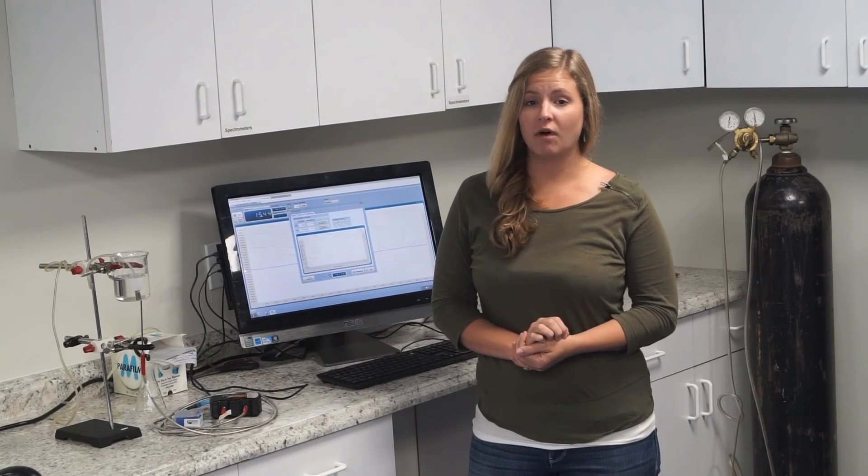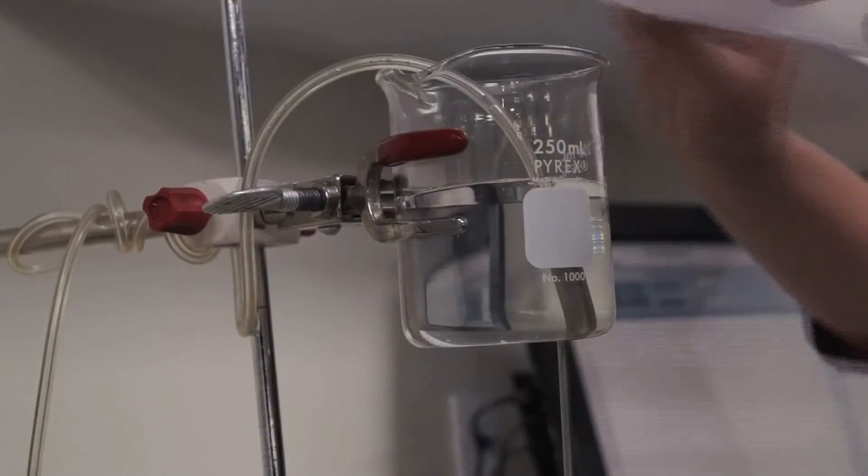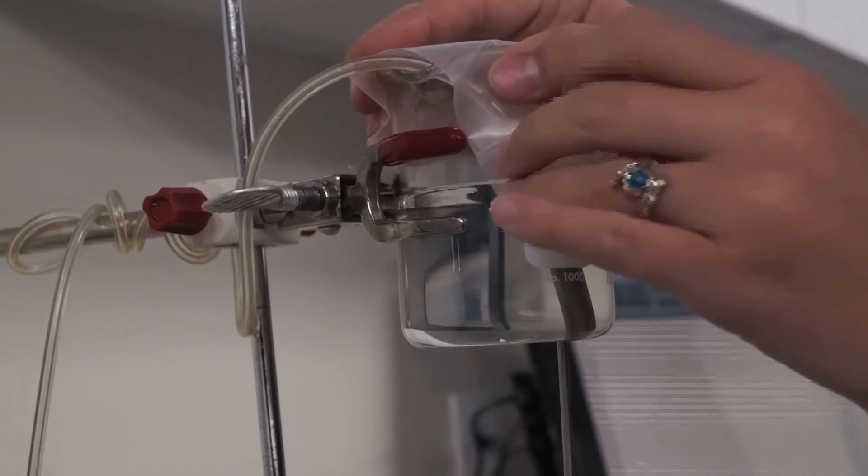For your zero percent oxygen point, you're going to need to purge your sample liquid of all dissolved oxygen. For that, you'll need a diffuser and a tank of nitrogen. You also need to make sure that the vessel is airtight.